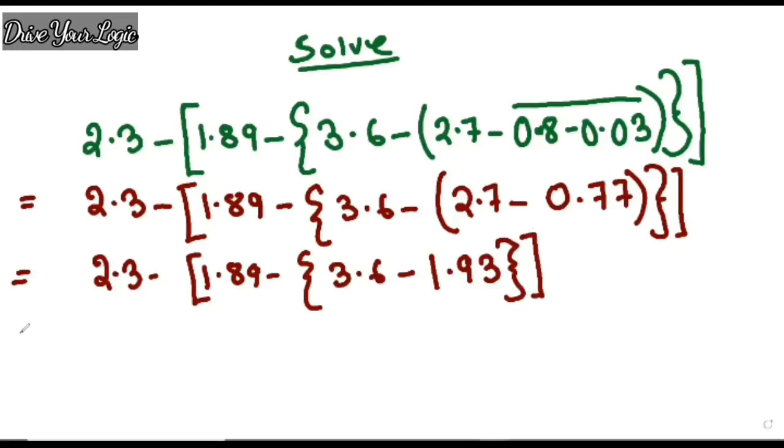Now again what you will do: 2.3 minus 1.89 minus solve this two, so 3.6 minus 1.93. Your answer is 1.67. Clear, just put the third bracket because the second bracket is over.